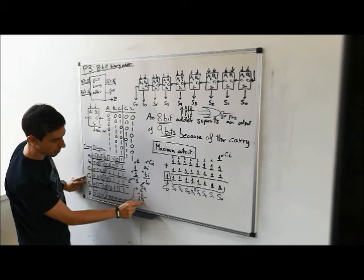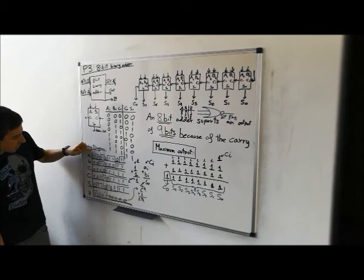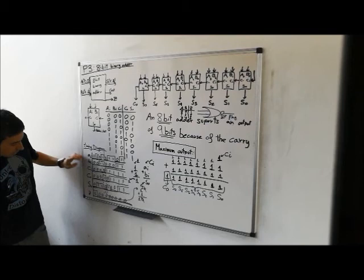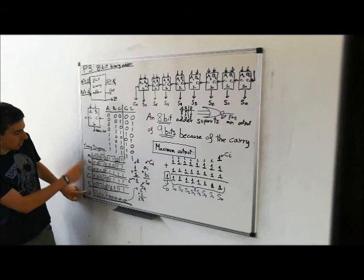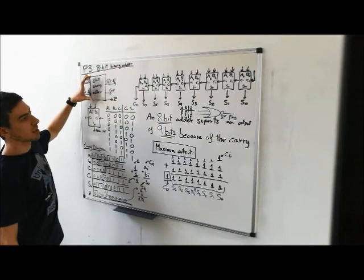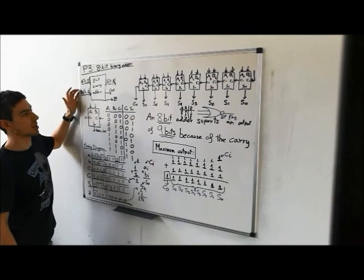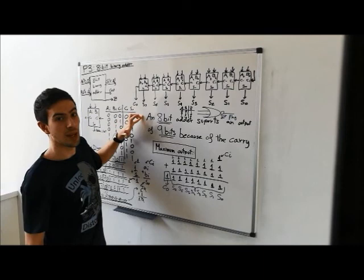In this example, if A is zero and B is zero, and all the inputs are zero, the outputs will be zero, except the zero flag which detects that all is zero, so it's 1. Here we have the example of how an 8-bit adder would be. As we can see, we have 8 one-bit adders, which result in an 8-bit adder, which is what we were looking for. An 8-bit adder supports a maximum output of 9 bits because of the carry.